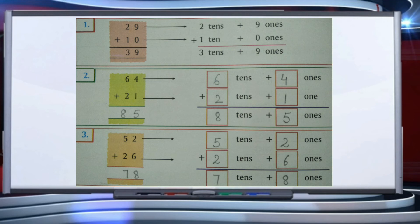Third question: 52 plus 26. We write 52 as five tens plus two ones, and 26 as two tens plus six ones. Add the ones place: two plus six equals eight. Then add the tens place: five tens plus two tens — five plus two equals seven. We get seven tens and eight ones.